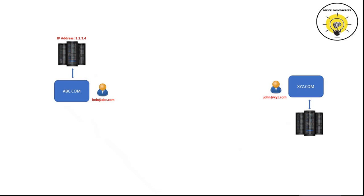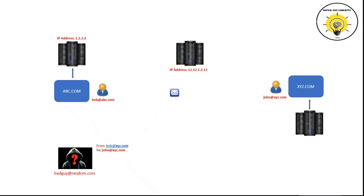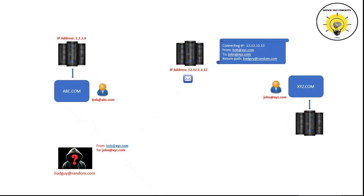Let's consider one more example. Assume we have two organizations, abc.com and xyz.com. Now someone who does not belong to either organization is trying to send an email using the abc.com domain. He will use bob@abc.com as the sender address and send that email to john@xyz.com. This email will not be processed by the mail server of abc.com because it was not sent from bob's actual mailbox, so it will be processed by a random server. During that process, a few attributes will be added within the email header: the connecting IP address will be the IP of this random email server, and the return path will be the email address of the attacker using the abc.com domain.